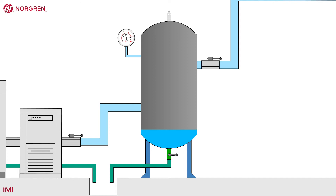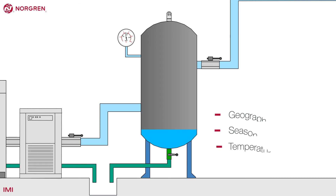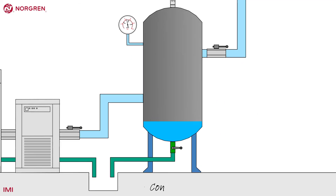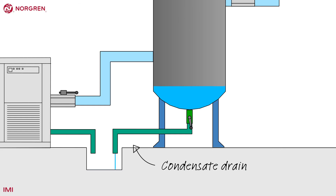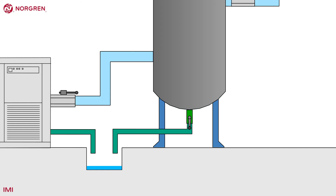The amount of water in the air will depend on many variables, including geography, seasons and temperature. The condensate drain allows that water to drain away. It may be a legal requirement in your country to dispose of this correctly, as it could contain oil and other contaminants.